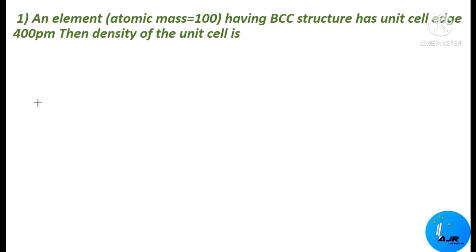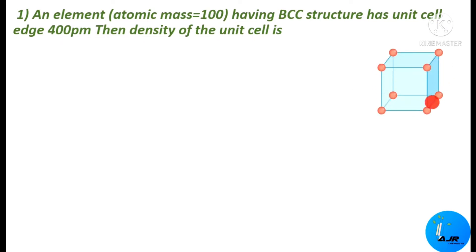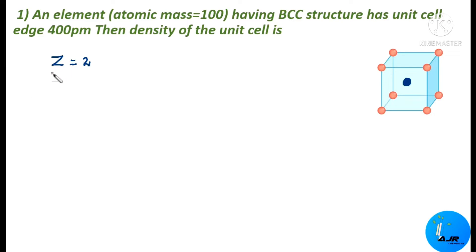Let us write the data first. In a normal unit cell, the BCC structure has an atom at the center along with the corner atoms. So this body centered cubic system has one atom at the center along with the corner atoms. Now Z, the total number of particles in BCC, is 2. You can find the link in the description box for how to calculate the number of particles in a unit cell.